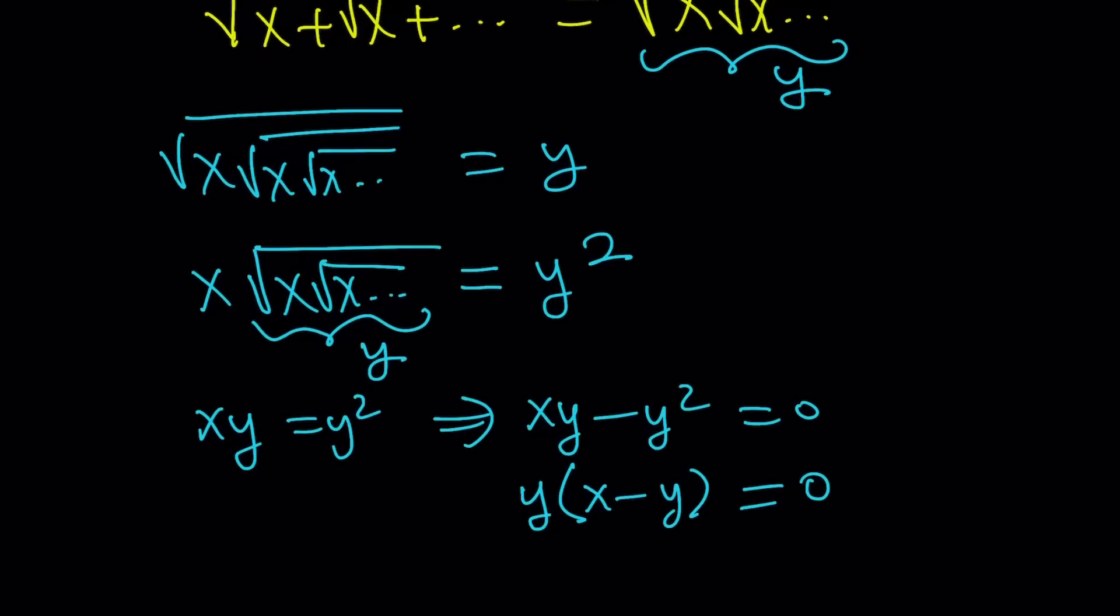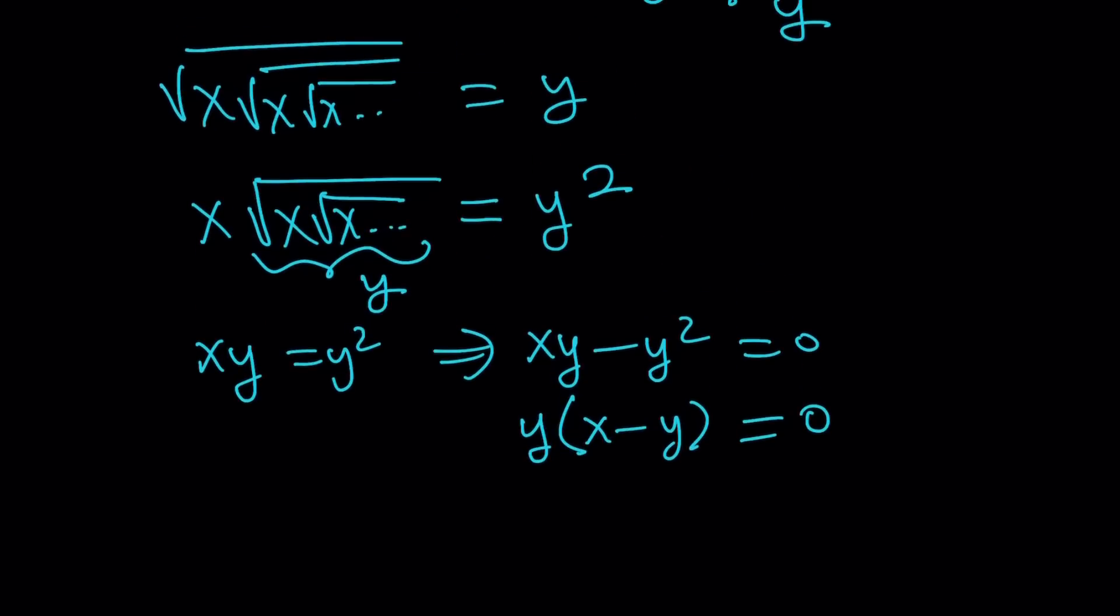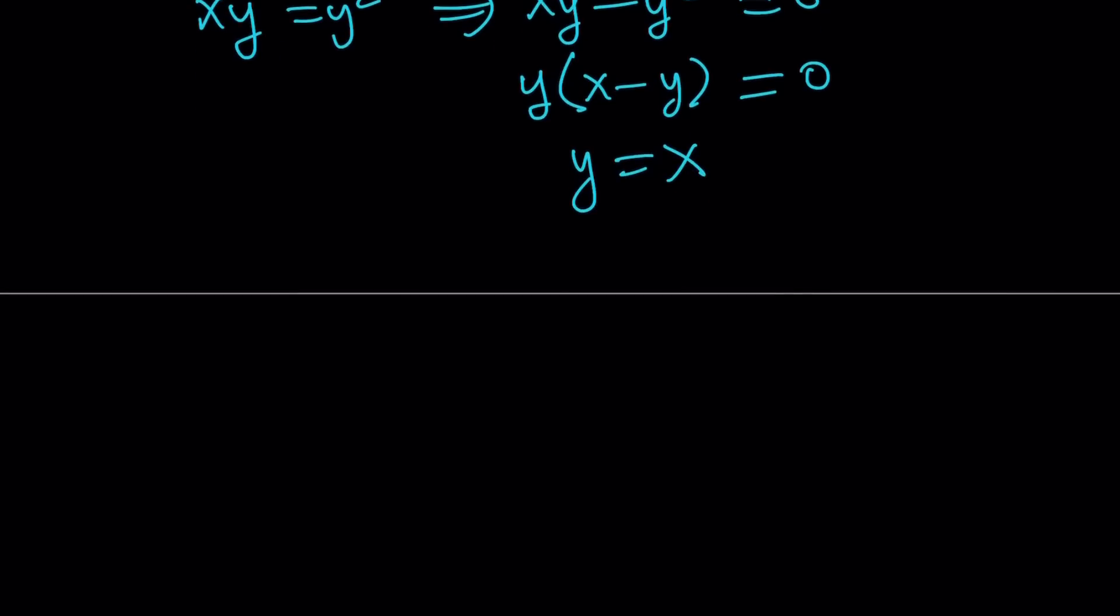So, from here, remember, our goal is to solve for x in terms of y. So, from here, we get x equals y, or y equals x. So, y equals x. That means the right-hand side equals x. Okay?